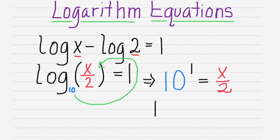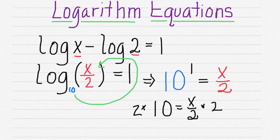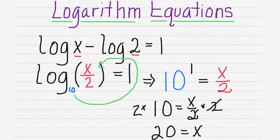10 to the 1 is just 10. 10 to the 1 is equal to x over 2. We multiply both sides by 2 to get x by itself. And we have 20 equals x because these cancel out. That is your solution.